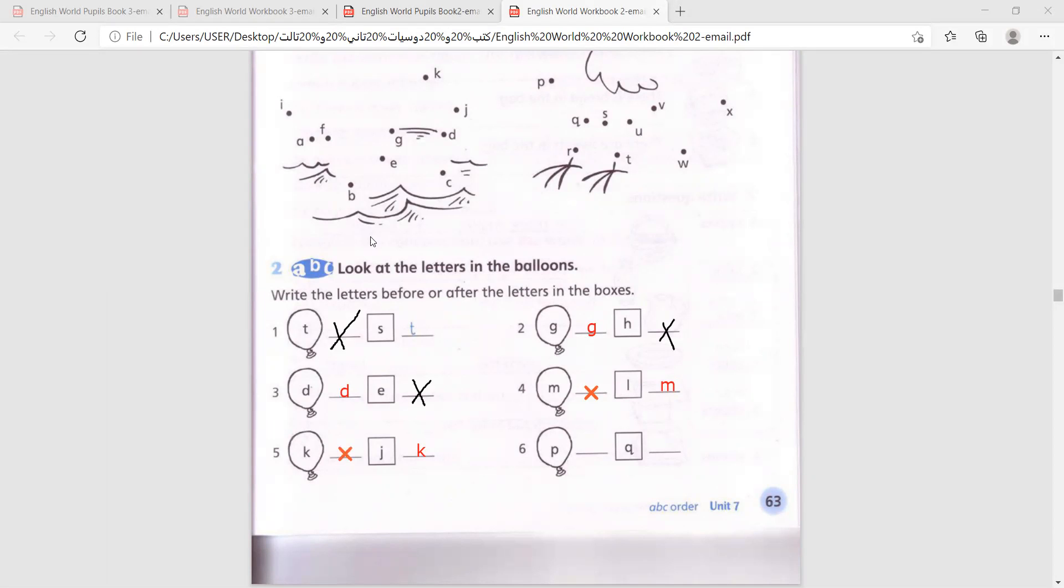Number six, P and Q. H, I, J, K, L, M, N, O, P, Q, R, S. So P is before Q. Write P here. This is it. And the rest will remain empty. This is the other question. I hope you understand it. It's very easy. All you have to do is write the letters in the right order.